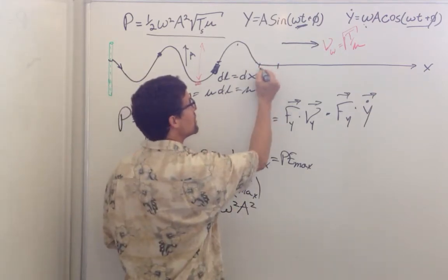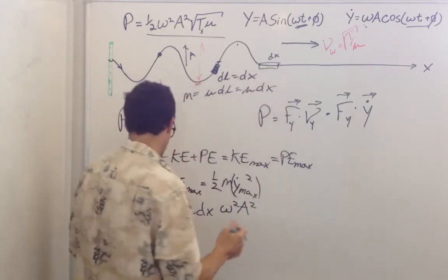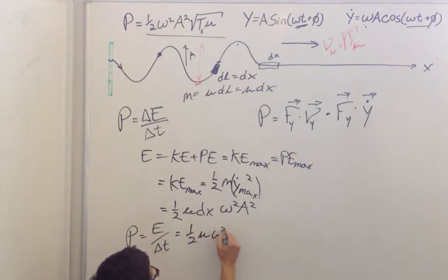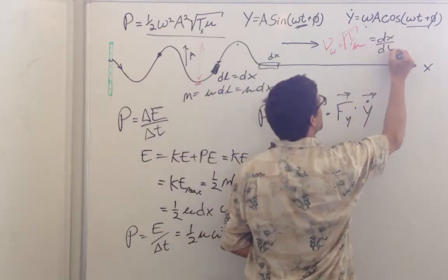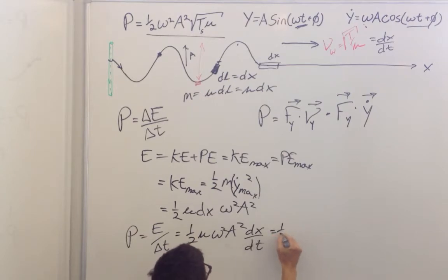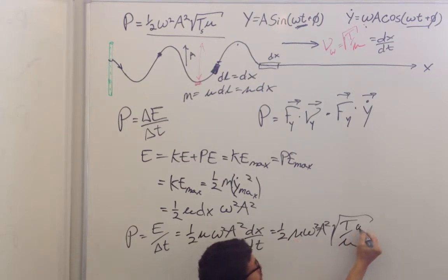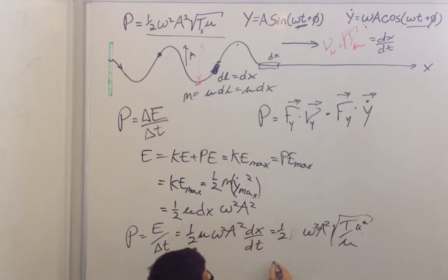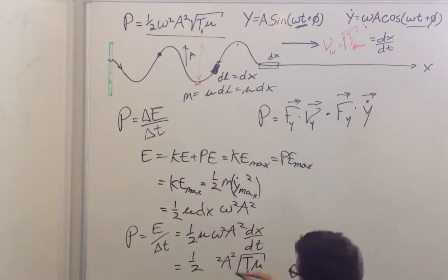The power that this wave transmits to the string chunk dx equals the energy divided by the time it takes to travel that distance, which gives one-half μ ω² A² times dx/dt. And dx/dt is how fast the wave is moving, so I can write this as one-half μ ω² A² times the square root of T over μ. Simplifying — pulling mu squared inside the square root — I get one-half ω² A² times the square root of tension times mu, where I use subscript s for string tension to distinguish it from the period.